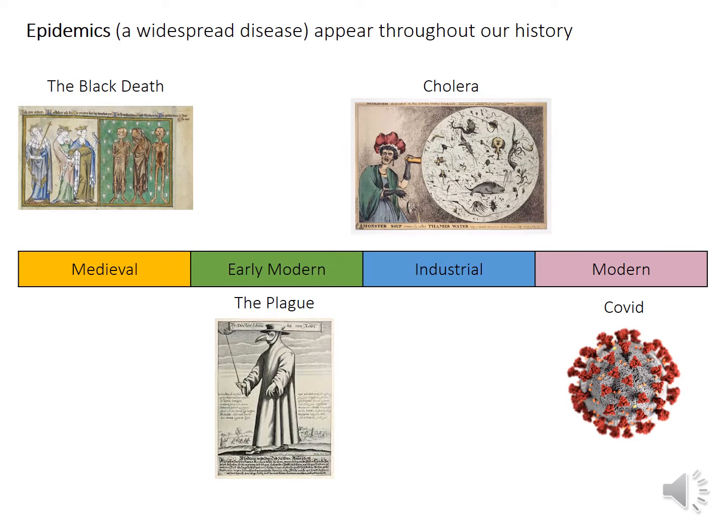The Black Death is the first of the four epidemics that you're going to cover in this course. Each of those periods we study with People's Health has got a major epidemic in it. In the Middle Ages it's the Black Death, in the early modern period it's the plague, in the industrial period it's cholera, and in the modern period it's COVID. You can see echoes of what we're going to talk about with the Black Death in all of those other epidemics when we get there.